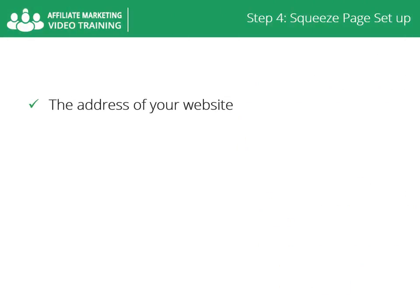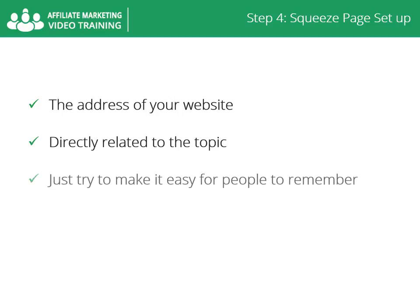A domain name will be the address of your website — it will be what all the URLs of your website will be attached to. You will need to buy a domain name that is directly related to the topic of your main affiliate product. Just try to make it easy for people to remember, so in case they remember your topic, they can easily go there and check your offer again.